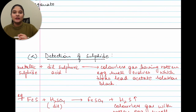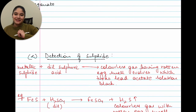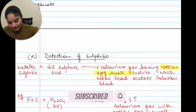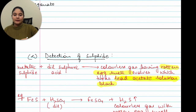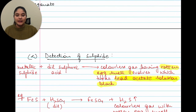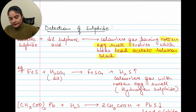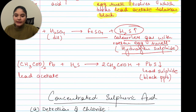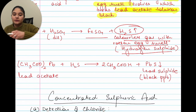Moving on to detection of sulfide. Metallic sulfide reacts with dilute sulfuric acid and gives a gas with the characteristic rotten egg smell. This turns lead acetate solution black. So the characteristic is colorless with rotten egg smell, and the confirmation test is that lead acetate paper or solution turns black. For example: FeS reacting with dilute H₂SO₄ gives FeSO₄ plus H₂S. That is your colorless rotten egg smell hydrogen sulfide gas.